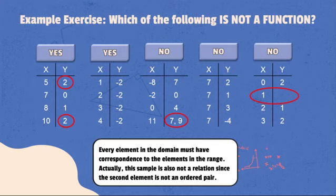Actually, this is not a relation too since the second element is not an ordered pair. Remember, every element in the domain must have correspondence to the elements in the range.